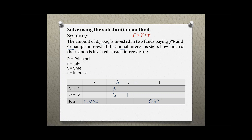Now I can fill in my variables. I'll call the principal of my first account X and the principal of my second account Y. I find the interest for each account by multiplying P, R, and T. For the first account that's X times 0.03 times 1. For the second account it's Y times 0.06 times 1.